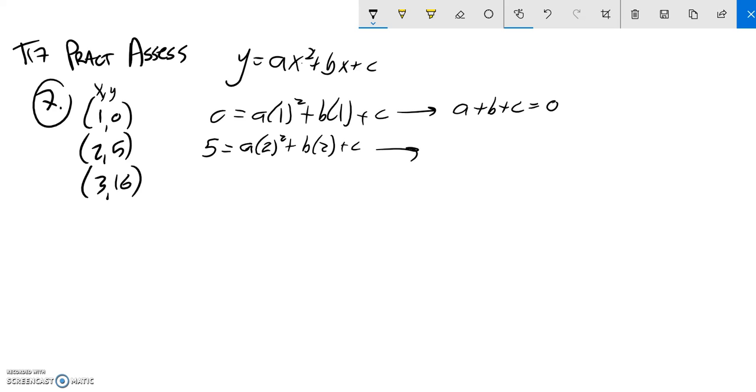Notice that's just the equation. 2 squared is 4. So 4a plus 2b plus c. That equals 5.